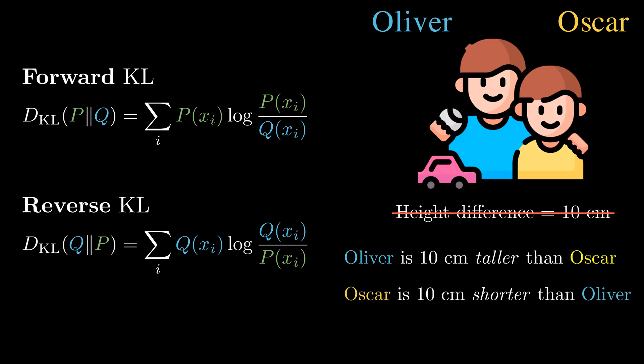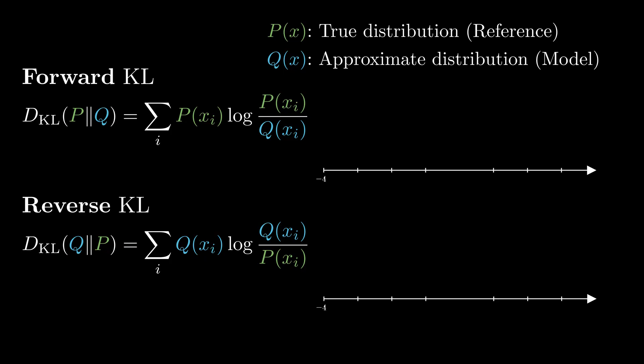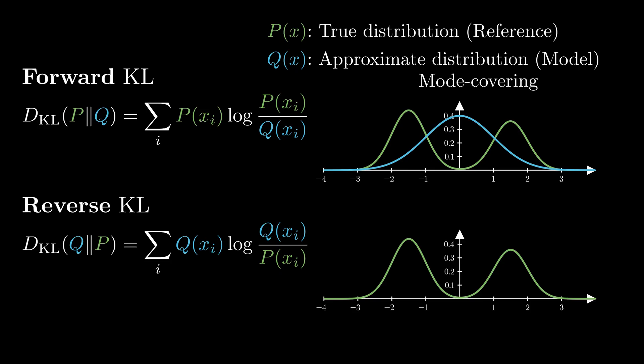We often refer to P as the reference, true distribution, and Q as our model, approximate distribution. Minimizing the forward and reverse KL results in different behaviors. Assume our true distribution P has two peaks. Here we try to approximate it using a simple Gaussian distribution Q. Forward KL punishes when distribution Q misses where P has mass. So Q spreads out to cover all modes. This results in mode covering behavior. Reverse KL, on the other hand, punishes Q for assigning mass where P has none. This leads to mode seeking. That is, the distribution Q picks one peak and ignores the rest.